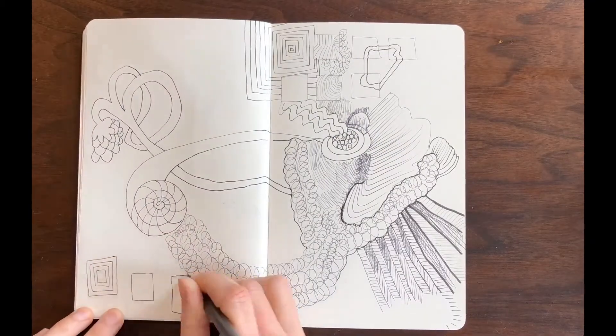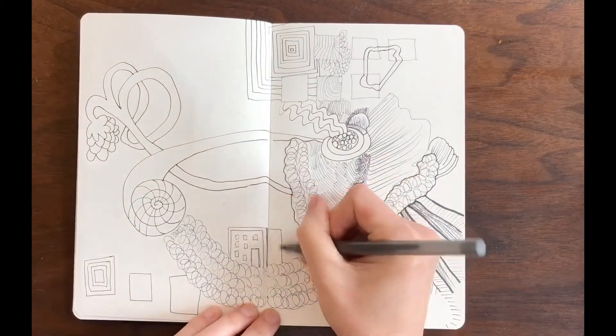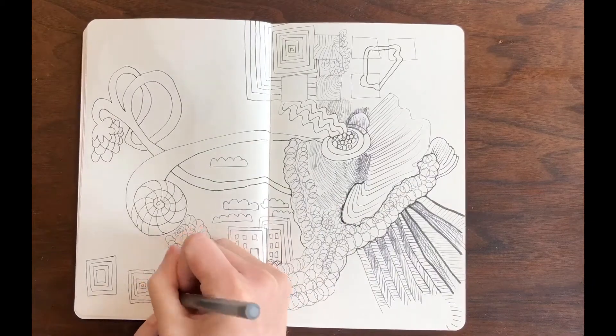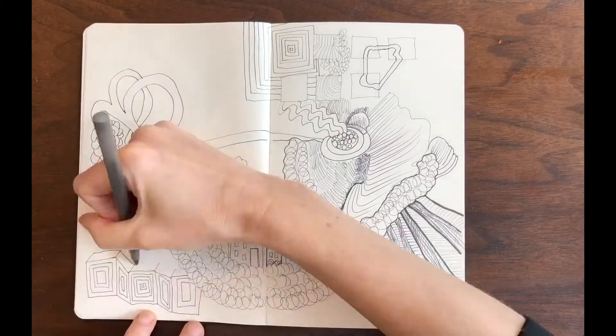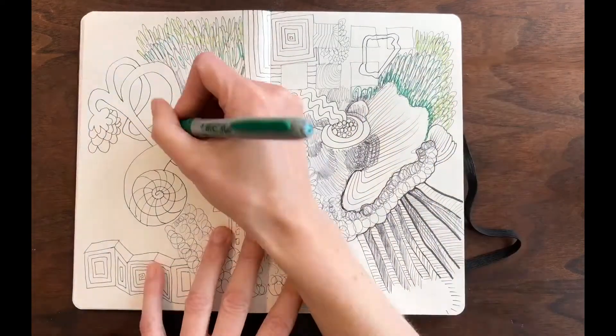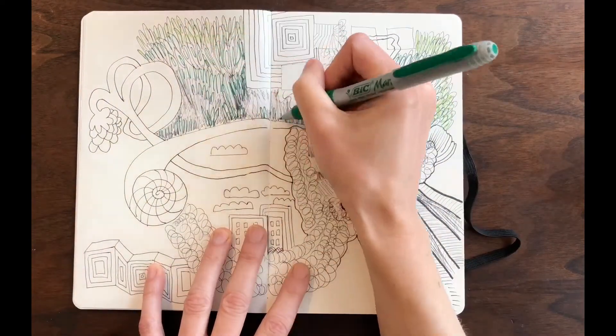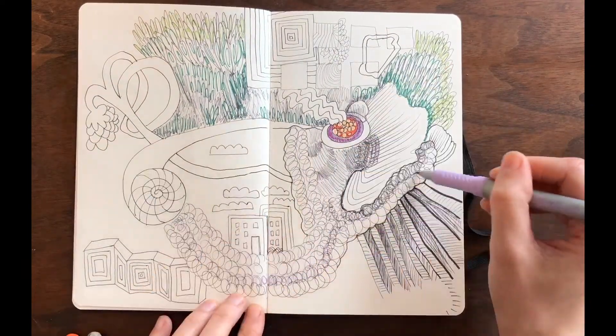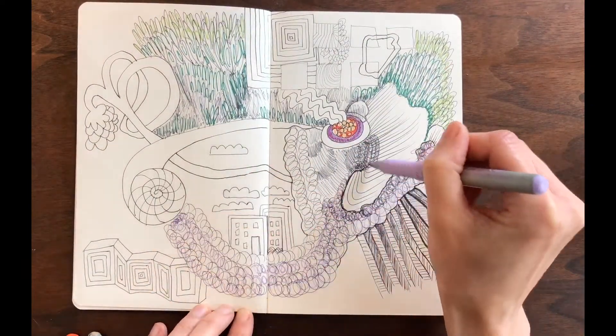In this doodle I have a lot of organic shapes so I thought I would make some geometric shapes too like squares and rectangles. Now I'm adding a little bit of color with some colored markers. As you can see I really like to fill up the whole page when I create a doodle.